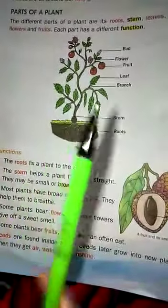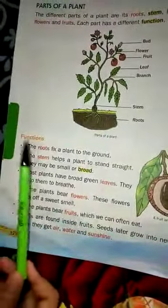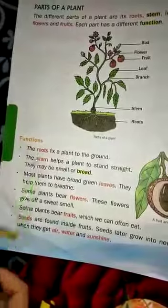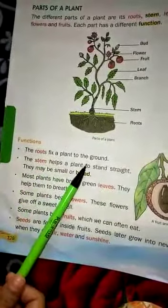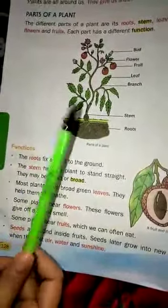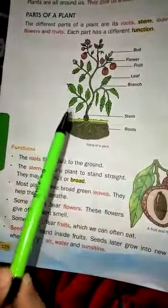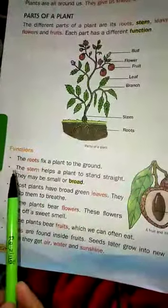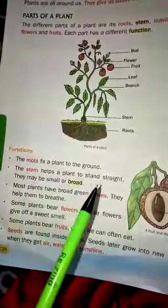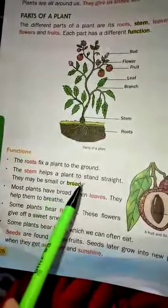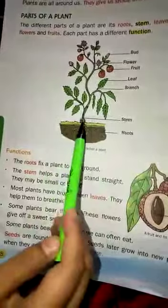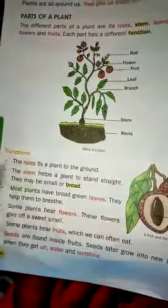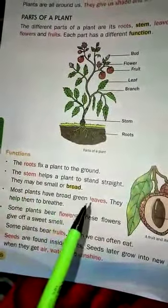All these parts have different functions. Starting with root — root fixes a plant to the ground. The root of the plant fixes the plant to the ground. Next one is stem. Stem helps a plant to stand straight. This stem helps a plant to stand straight. This may be small or it may be big and broad also.